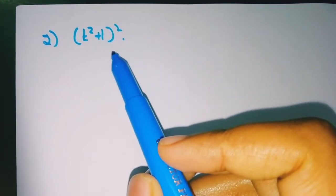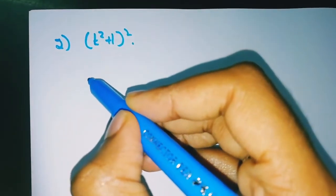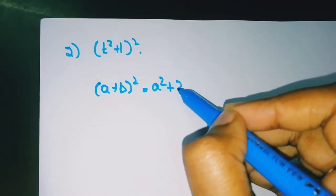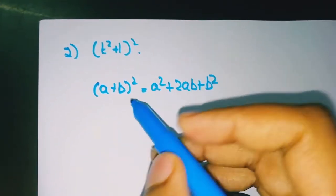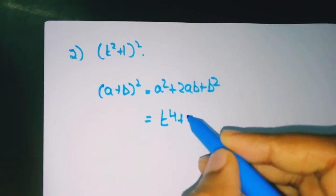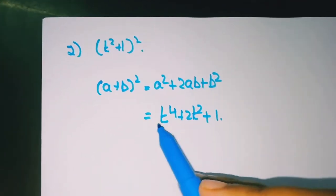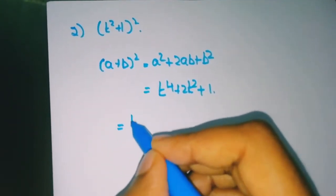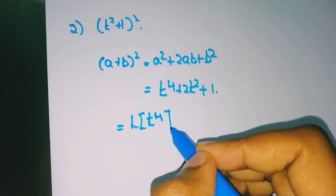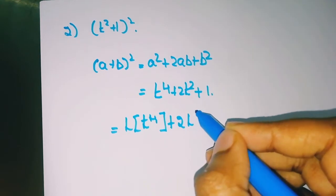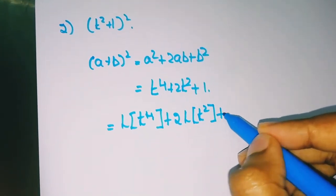Coming to the second problem: Laplace of (t² + 1)². This is in the form of (a + b)², and the expansion is a² + 2ab + b². With a = t² and b = 1, we get t⁴ + 2t² + 1. Now we apply Laplace to each function.